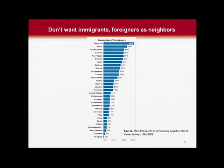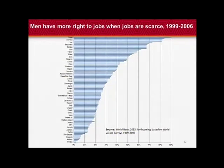Another question from the World Value Survey is 'I don't want an immigrant as a neighbor.' We plot these attitudes against the actual stock of immigrants. There seems to be a positive relationship. And there's a very strong positive relationship between attitudes of people saying they don't think women should get the jobs and actual female labor force participation.